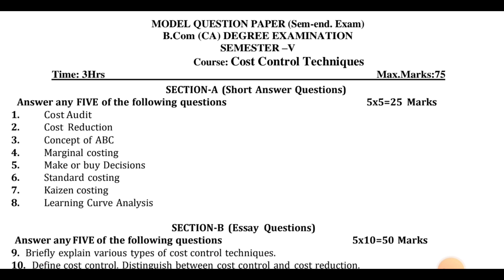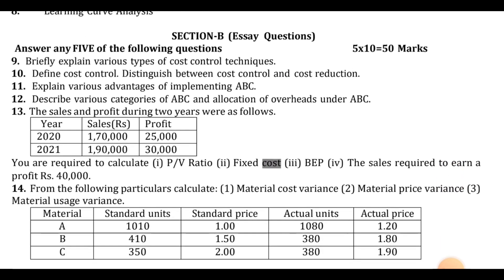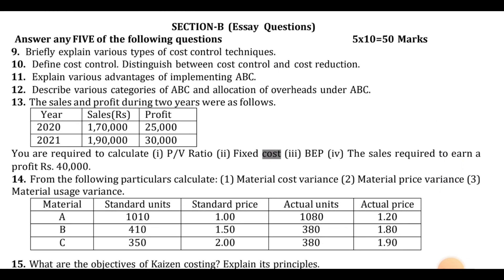The key topics covered include: cost audit, cost reduction, concept of ABC, marginal costing, make or buy decisions, standard costing, kaizen costing, and learning curve analysis. Short answer questions include: briefly explain various types of cost control techniques, and define cost control and distinguish between cost control and cost reduction.